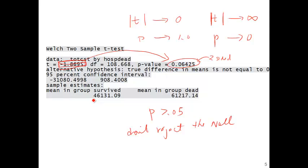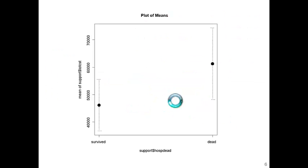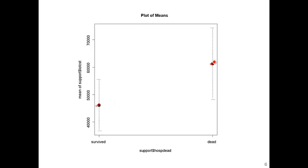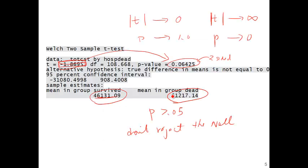Since this p-value is greater than 0.05, we don't reject the null hypothesis. We did not have enough evidence to show that total hospital costs are different between the two groups. This is the average hospital cost in survived patients and this is the average hospital cost in deceased patients. Although we see a difference, that difference did not reach statistical significance. That's how you interpret the result. This is a graphical presentation — this value of $46,000 and this value of $61,000 correspond to the group means.